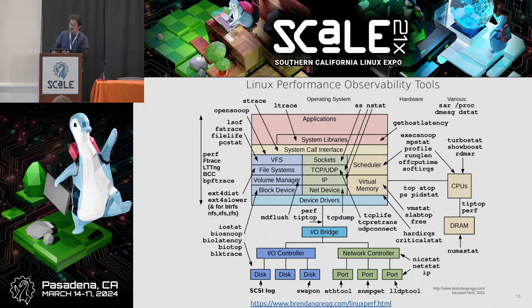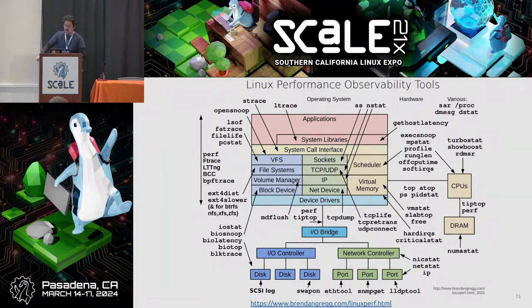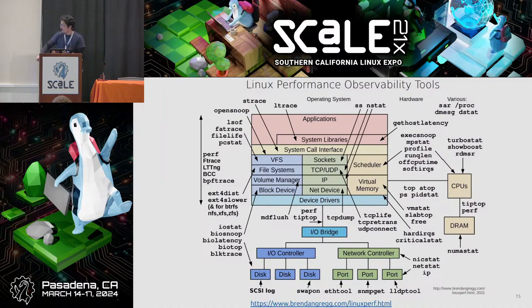This is a very well-known diagram from Brendan Gregg. He's a well-known person having given multiple presentations around performance and observability tools. This diagram gives you an idea of — depending on what you want to look into in the system — what tools you may have available, whether it's an application, sockets, TCP connections, and so on. I really recommend visiting Brendan Gregg's website; there are many presentations and he has a book on the topic.